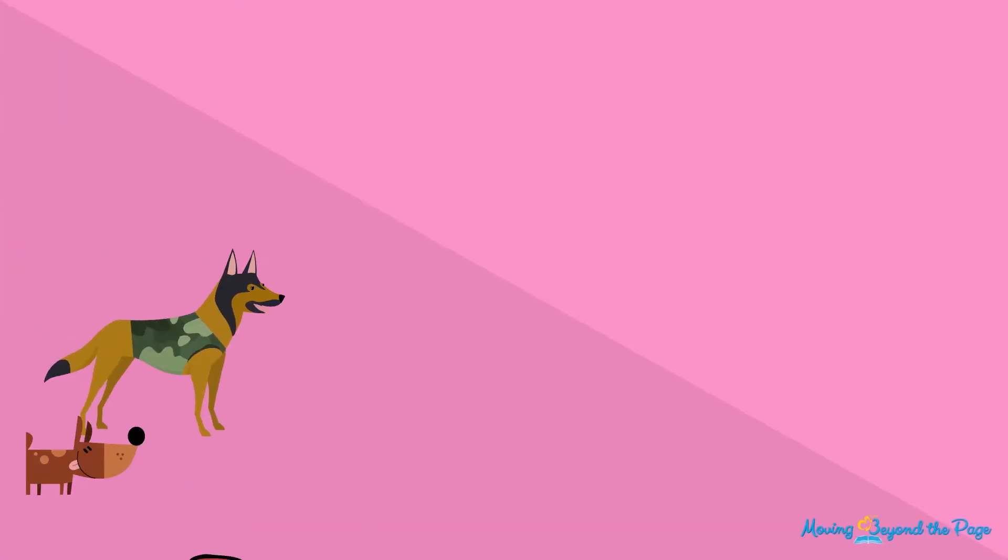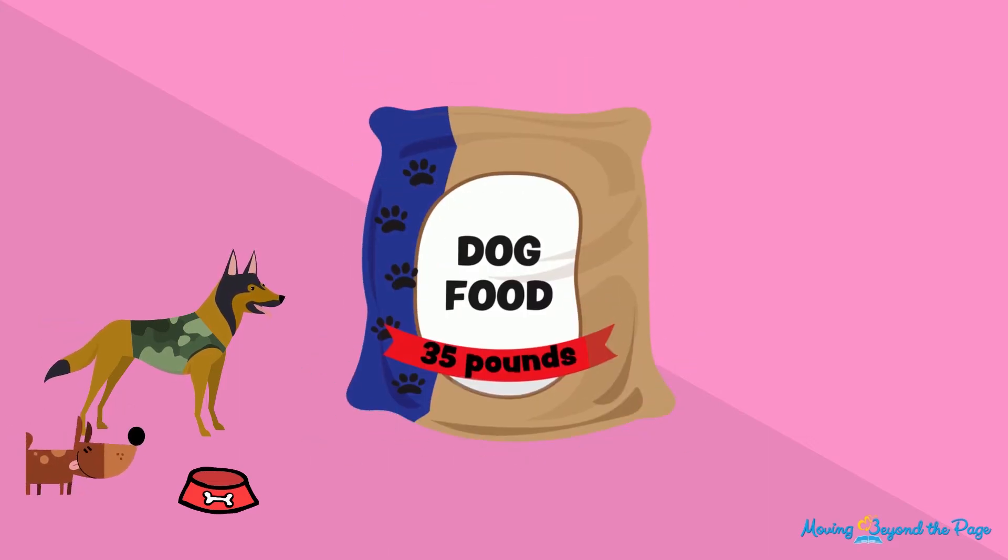Here's another situation using the same numbers. The animal shelter where you volunteer has a 35-pound bag of dog food, and the shelter director needs you to split the food evenly into 4 containers.